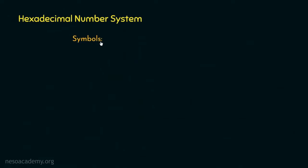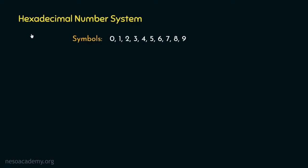The symbols used in the hexadecimal number system are 0, 1, 2, 3, 4, 5, 6, 7, 8, 9 — these 10 symbols are the same as in the decimal number system. But here the situation is different. If we notice the name, it's hexadecimal: decimal means 10 and the prefix hexa means 6. So basically, here we will have 10 plus 6, that is 16 symbols.